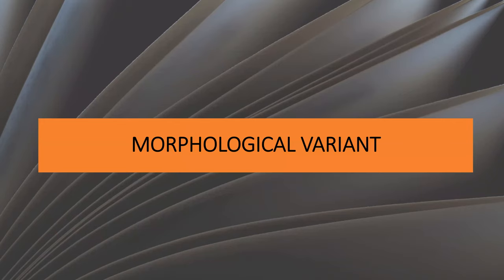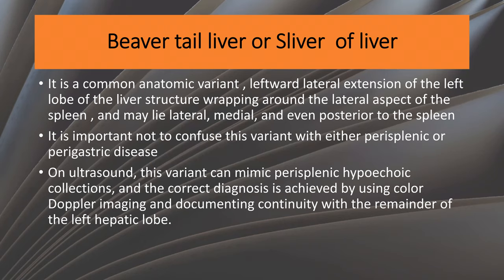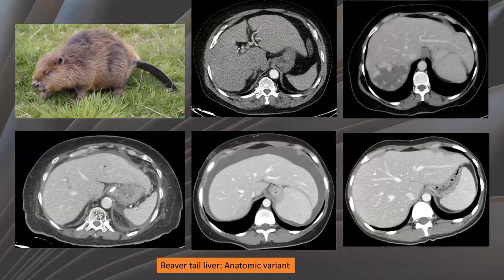Morphologic variants. The beaver-tailed liver, or sliver of the liver, is a common variant. It is a left lateral extension of the left lobe of the liver, wrapping around the lateral aspect of the spleen — maybe anterior, maybe posterior, maybe lateral or medial — and should not be confused with perisplenic or perigastric pathology.